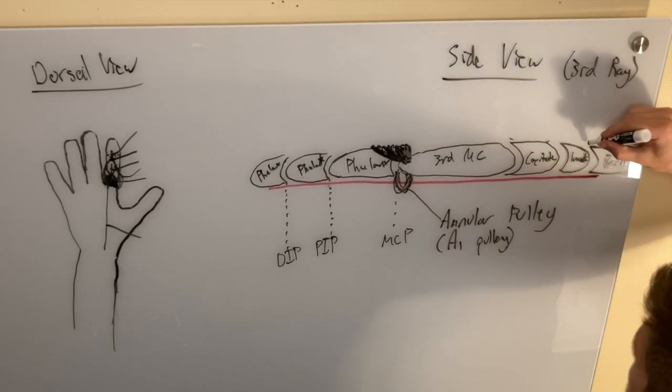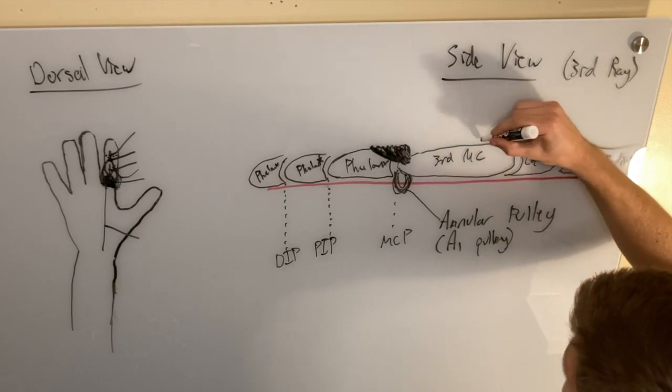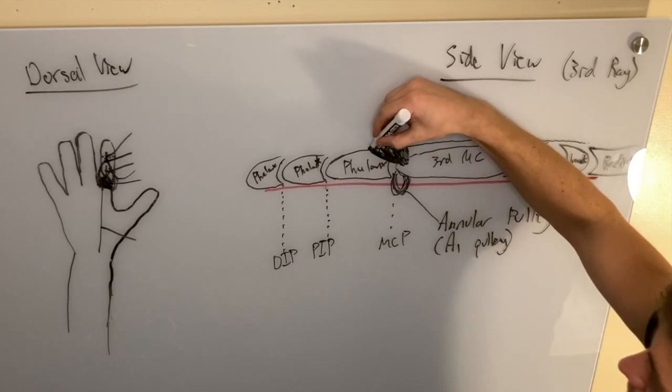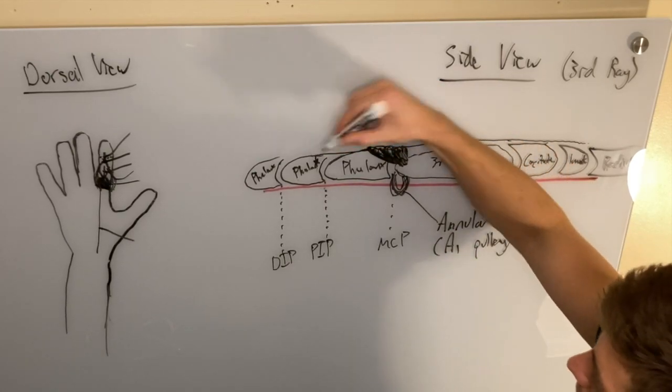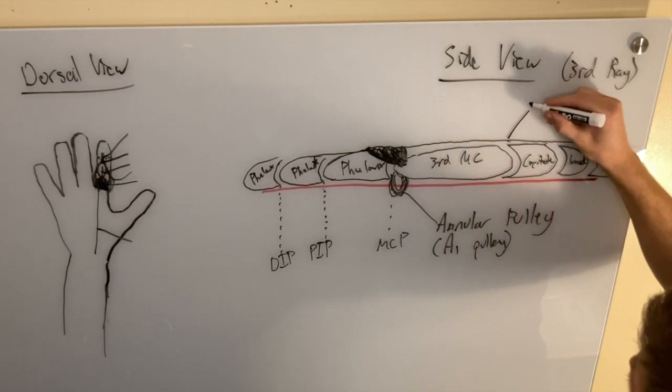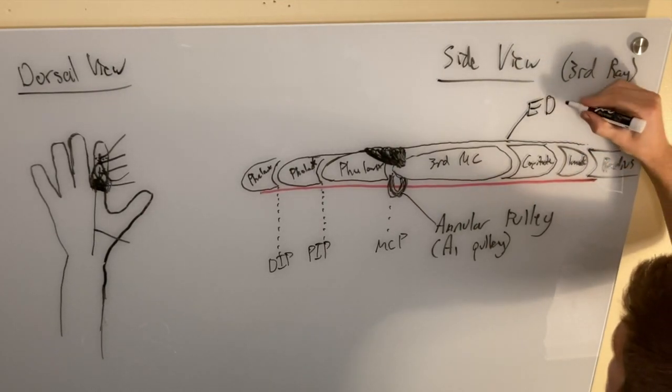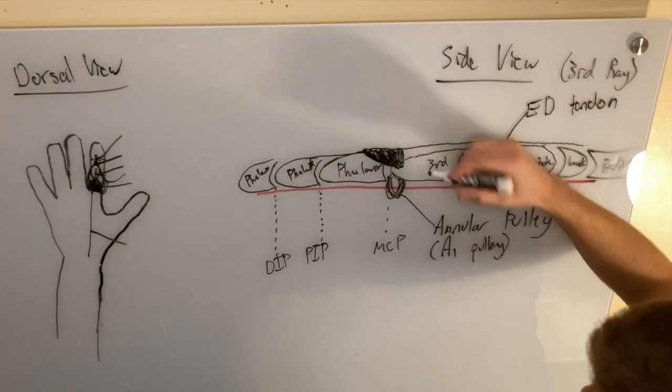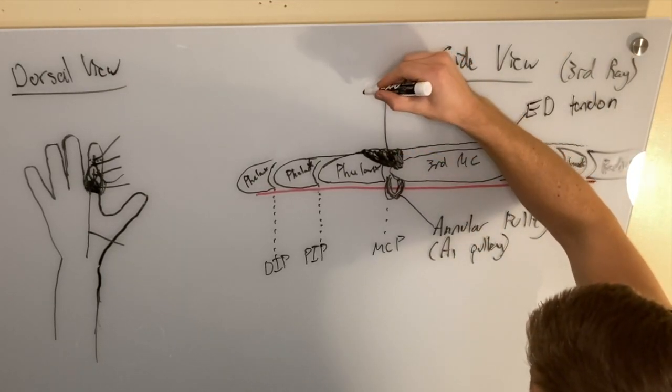You have the tendon of extensor digitorum coming, inserting right here. And now we have the central band. So this is extensor digitorum tendon. This is the dorsal hood.